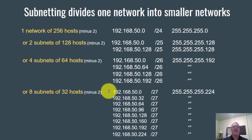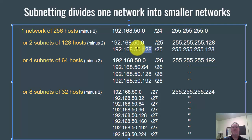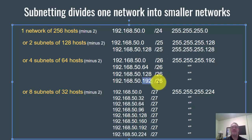Let's look at this another way. One network of 256 hosts: 192.168.50.0/24. For two subnets of 128 hosts each, you'd have 192.168.50.0/25 and 192.168.50.128/25. Notice you have 0–127 and 128–255 — there are your two subnets. For four subnets of 64 hosts each, the networks go up by 64: 192.168.50.0/26, then .64, then .128, then .192. All four have a /26 subnet mask.